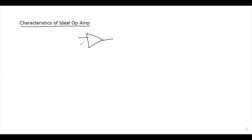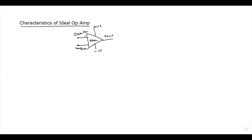Here, this is the inverting input and this is the non-inverting input. So this is the inverting and this is the non-inverting. Here we have the inputs and this is V-output, the output. And so this is the positive power supply and this is the negative power supply. So this is the operational amplifier.